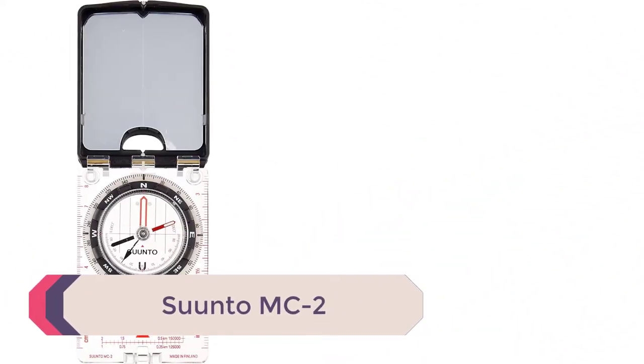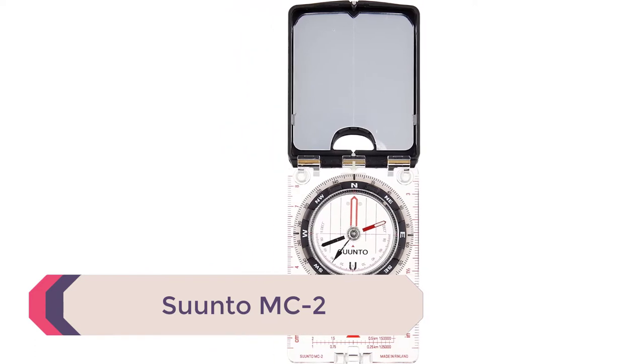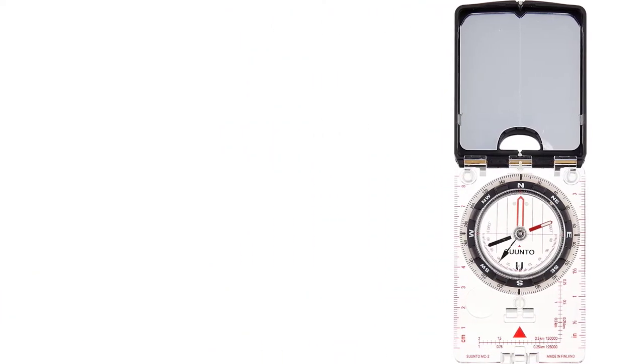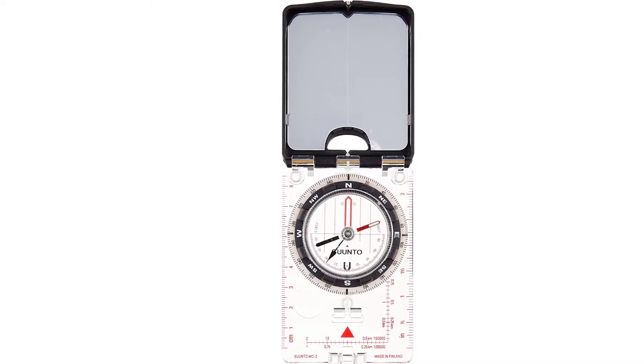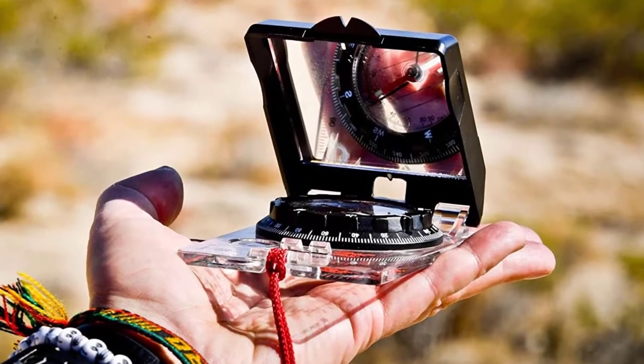Number 5: Suunto MC2. The MC2 by Suunto is a high-quality mirror compass designed for precise directional measurements. This compass is ideal for climbers and hikers that are traveling through mountainous terrain. The Suunto has a built-in clinometer capable of measuring the inclination of your route.